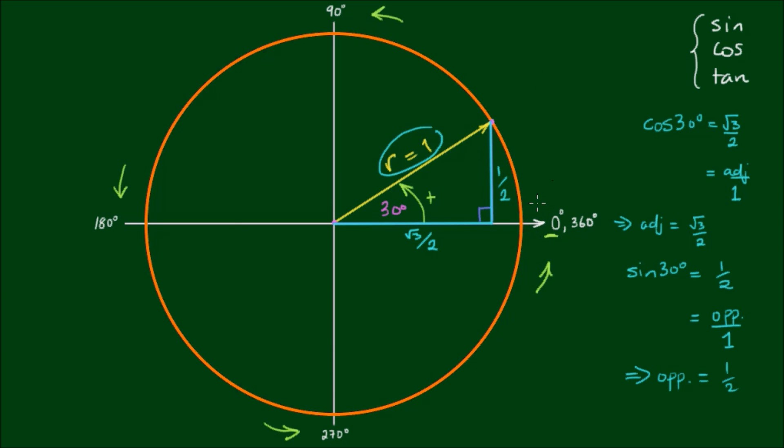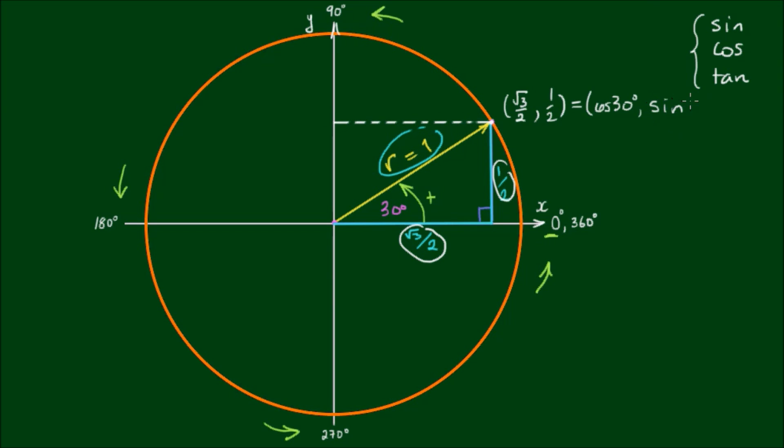If we consider this horizontal line as the x-axis and the vertical line as the y-axis, we can consider this root 3 on 2 as the x-coordinate of this point on the circle, and this 1 half as the y-coordinate. So the cosine of an angle always refers to the horizontal position of a point on the circle, and the sine of the angle always refers to the vertical position or coordinate on the unit circle.